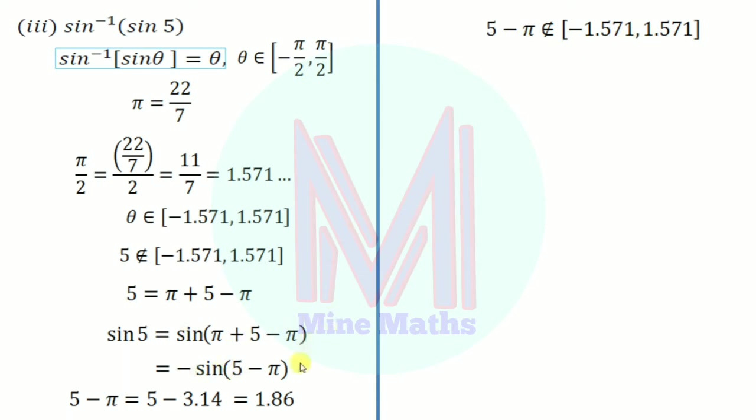Instead, if we add and subtract 2π: 5 equals 2π plus 5 minus 2π. Now substitute sin 5 equals sin of 2π plus 5 minus 2π. We apply sin 360 plus theta equals sin theta, so sin 5 equals sin of 5 minus 2π.